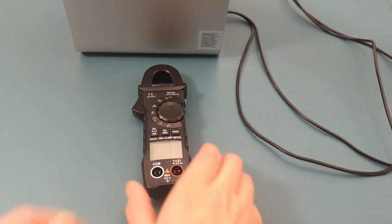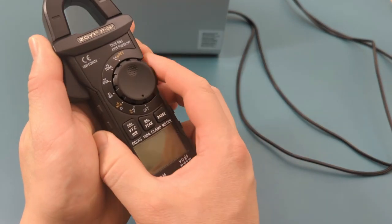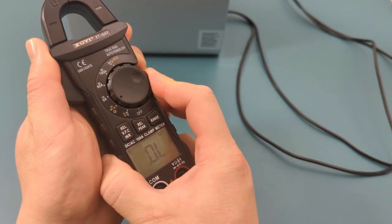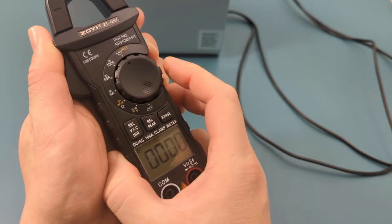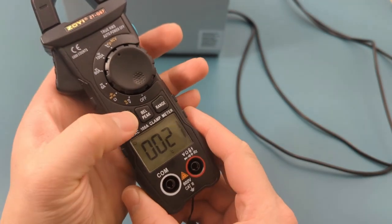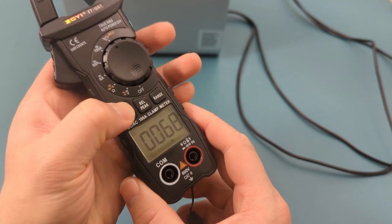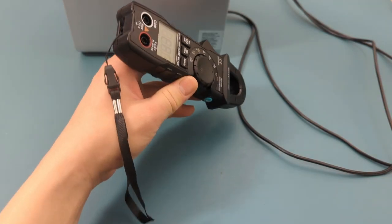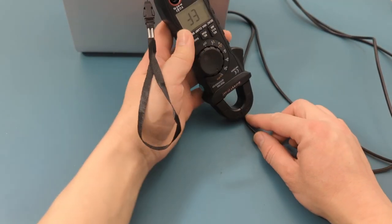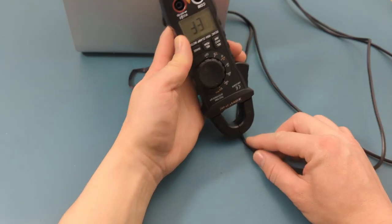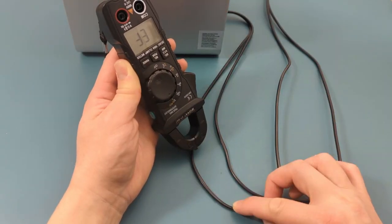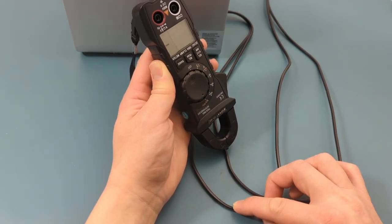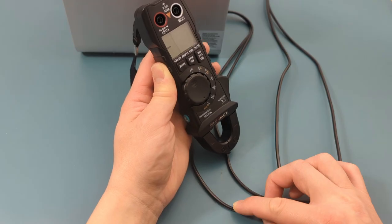The next test involves performing non-contact voltage detection. Turn the dial to the temperature NCV setting. Press the select button to toggle to the NCV mode. The sensor is at the tip of the meter. You will hear a beep sound if the sensor detects an AC electromagnetic field. There is no electromagnetic field because this is the neutral wire. You hear a beep since there is an electromagnetic field, and this is the live wire.